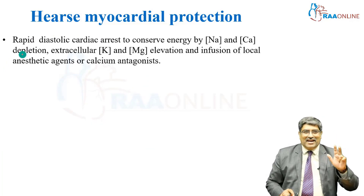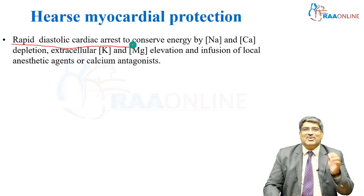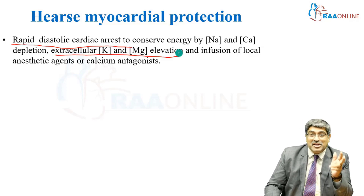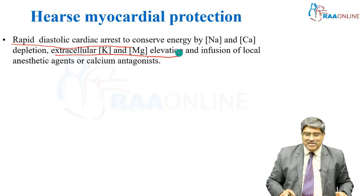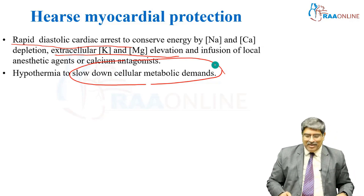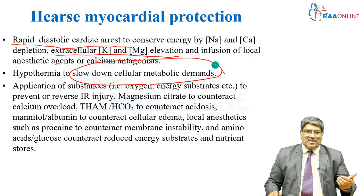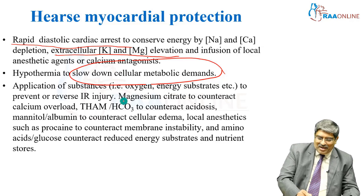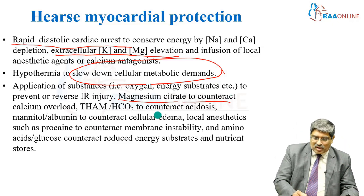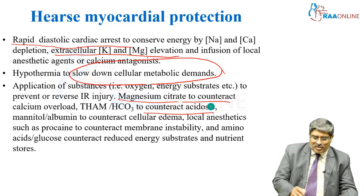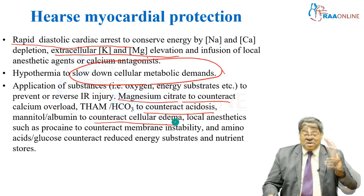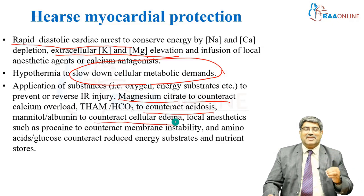For the first part — cardiac arrest — rapid diastolic cardiac arrest conserves energy via sodium and calcium depletion, extracellular potassium and magnesium elevation, and infusion of local anesthetic or calcium antagonists. Second, hypothermia slows cellular metabolic demand. Third, substances are added to prevent or reverse ischemic reperfusion injury: magnesium citrate to counter calcium overload, Tris-hydroxy aminomethane or bicarbonate to counter acidosis, mannitol or albumin to counter cellular edema, local anesthetics such as procaine to counteract membrane instability, and amino acids and glucose to counteract reduced energy substrates and nutrient stores.